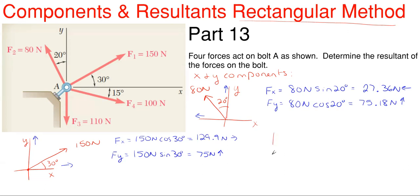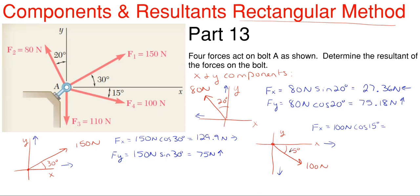Next is F4 — 100 newtons in the down-right direction, only 15 degrees off the x-axis. Since the force is down and to the right, the components are also down and to the right. The x component is 100 × cos(15°) = 96.6 N to the right, and the y component is 100 × sin(15°) = 25.9 N downward.